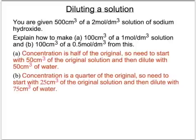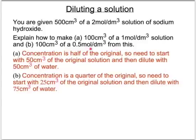Here are two more questions. First: you have 500 cm³ of a 2 mol/dm³ NaOH solution and want to make 100 cm³ of a 1 mol/dm³ solution — half the concentration. Take 50 cm³ of the original and top up with 50 cm³ of water. Second: to make 100 cm³ of a 0.5 mol/dm³ solution — a quarter the concentration of the original — take 25 cm³ of the original solution and dilute with 75 cm³ of water.